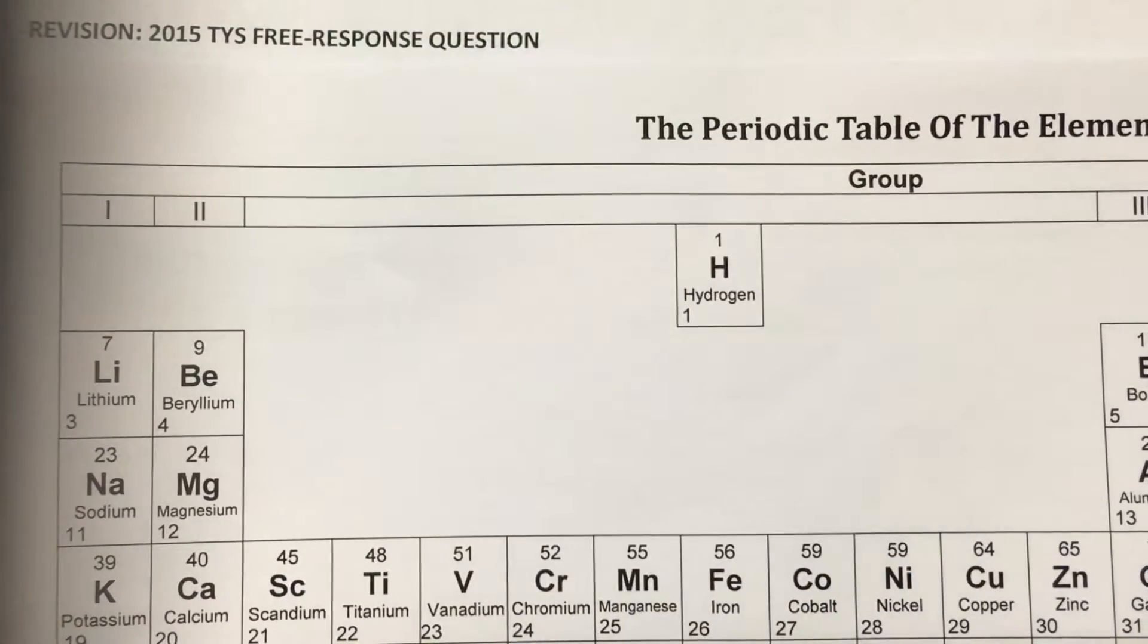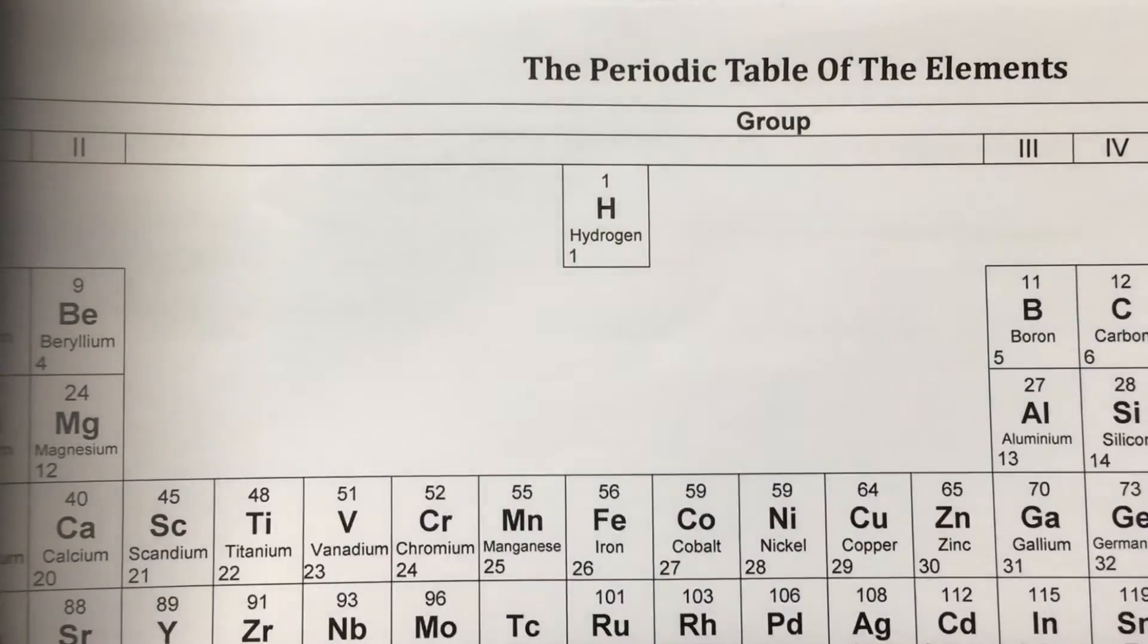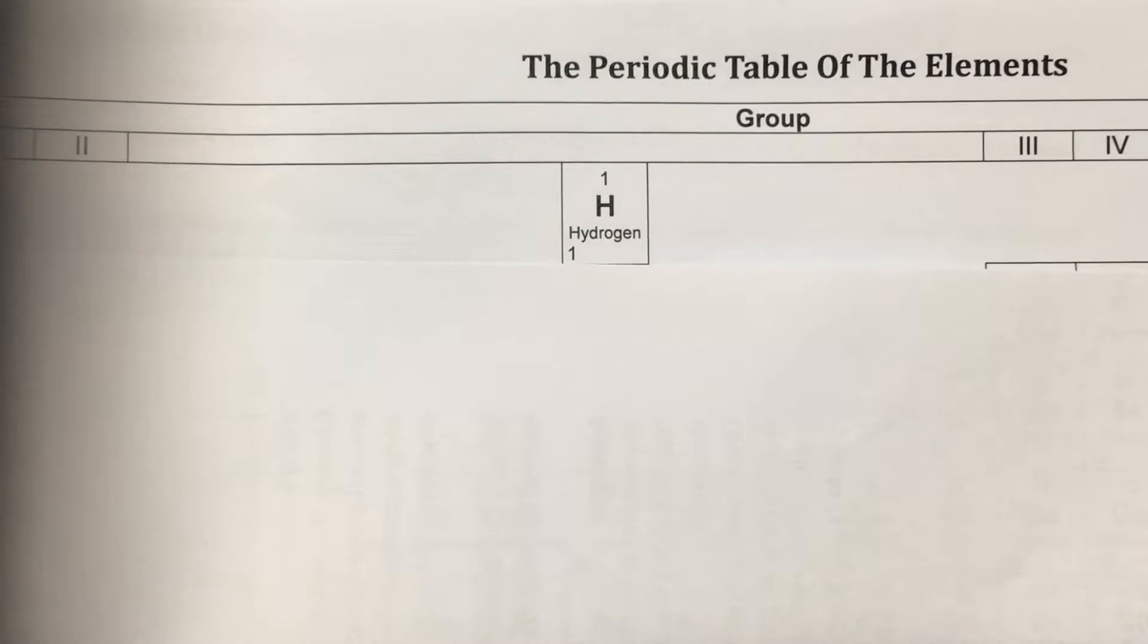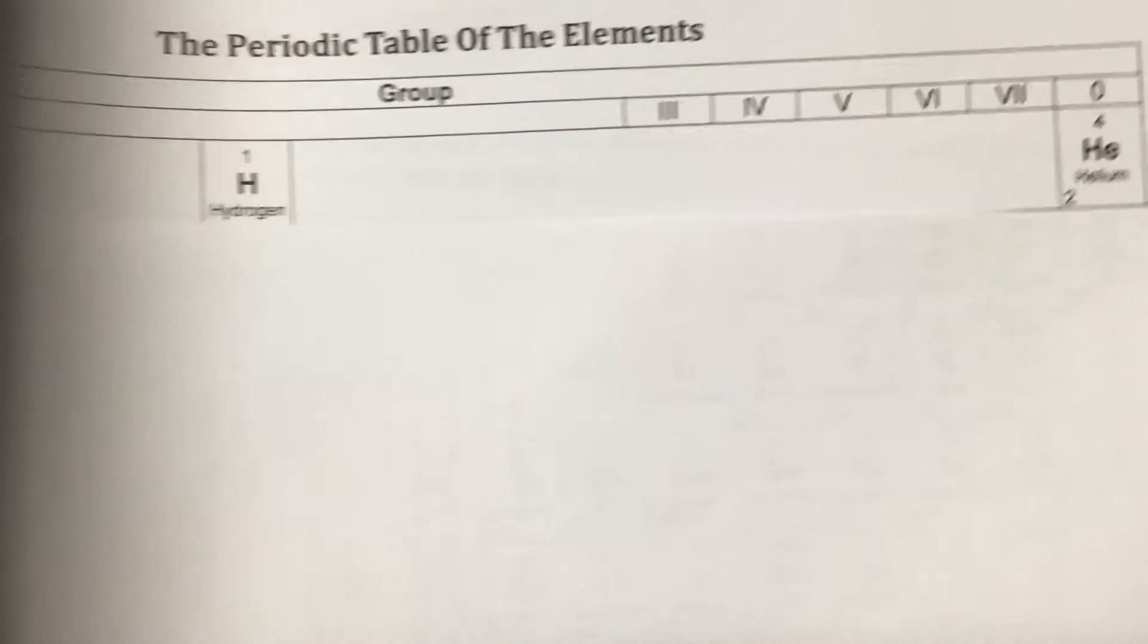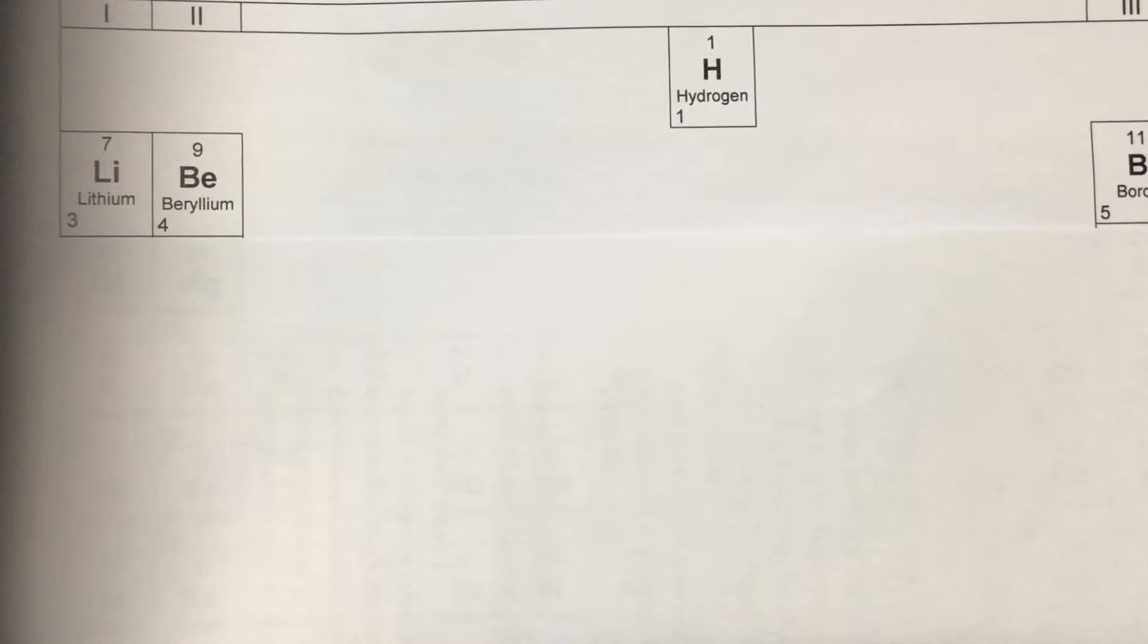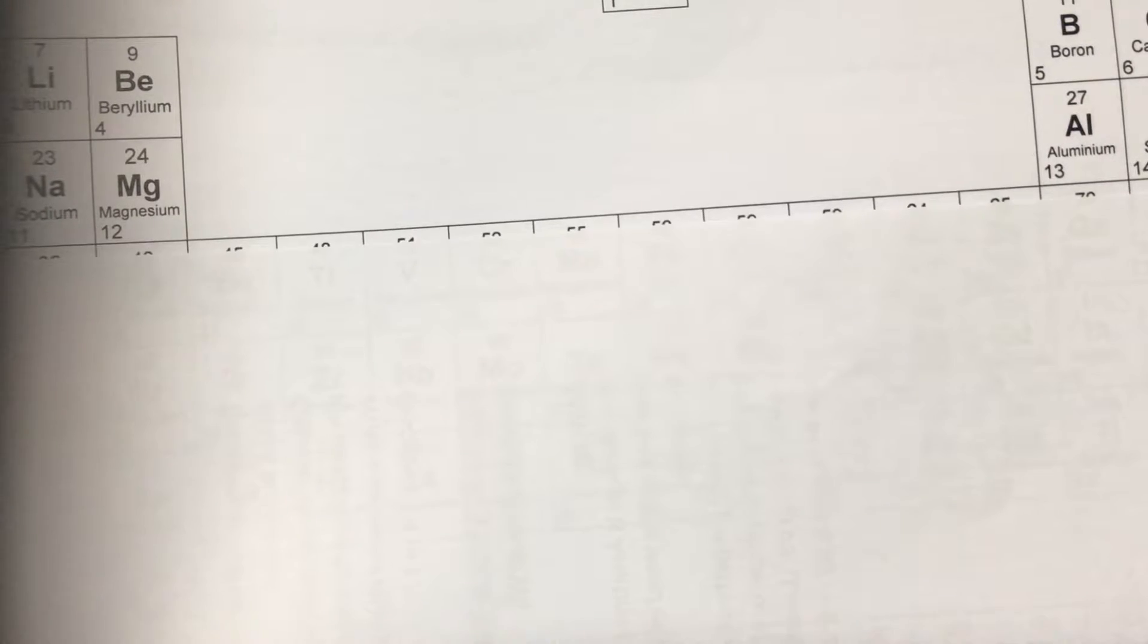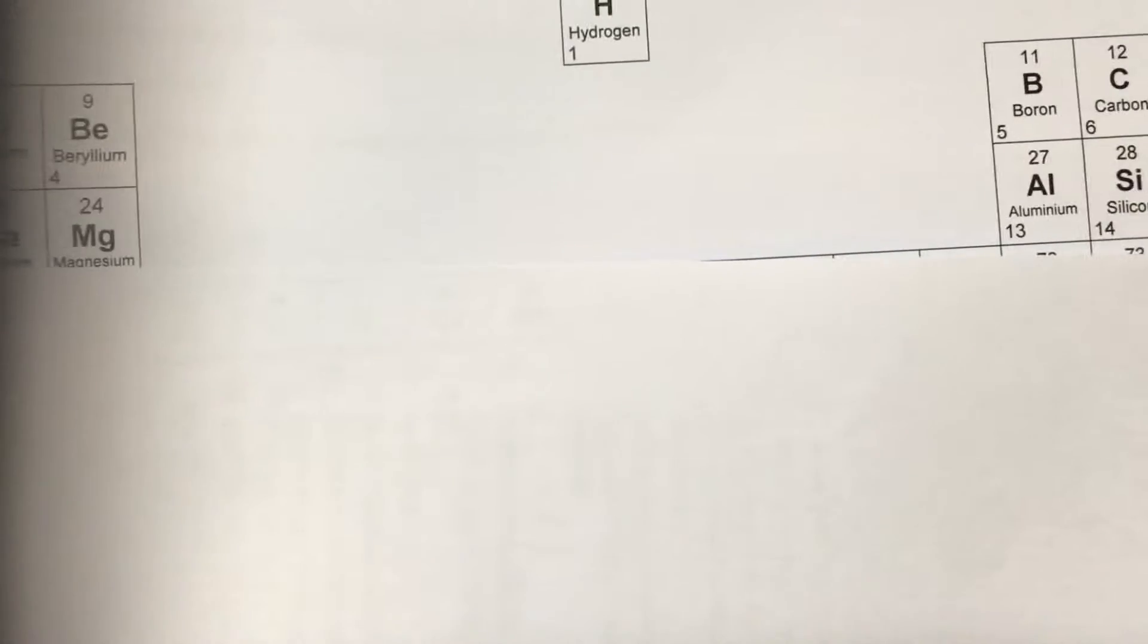Let's look at a periodic table. The first period consists of hydrogen and helium. The second period, we have lithium, beryllium, across, all the way to neon. Third period, we have sodium, magnesium, across, all the way to argon.